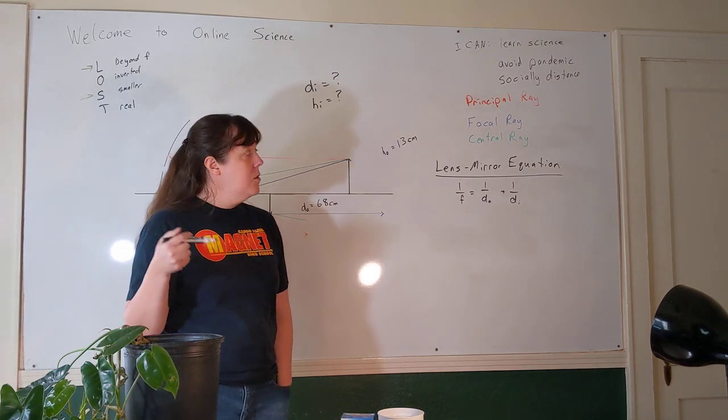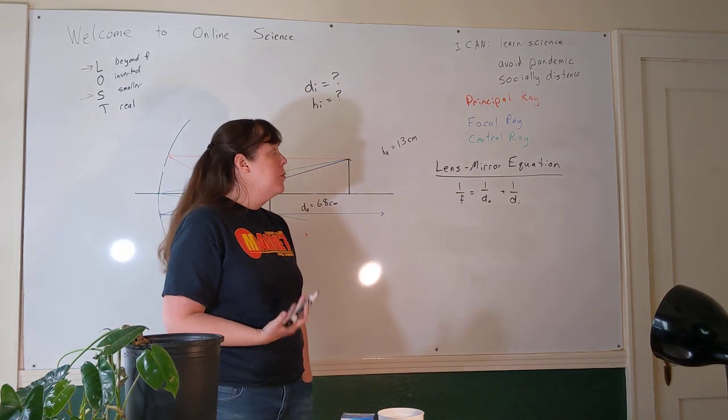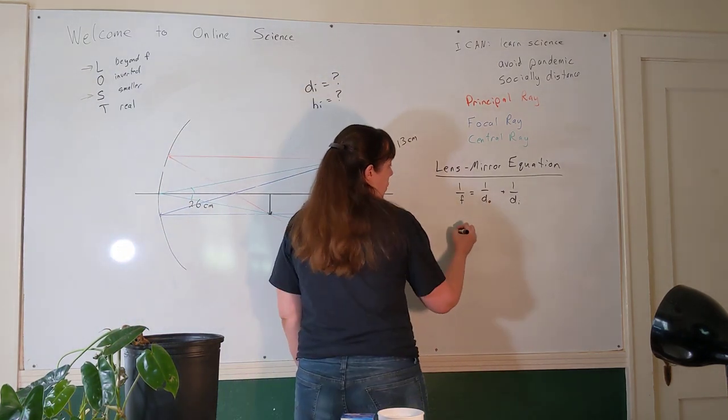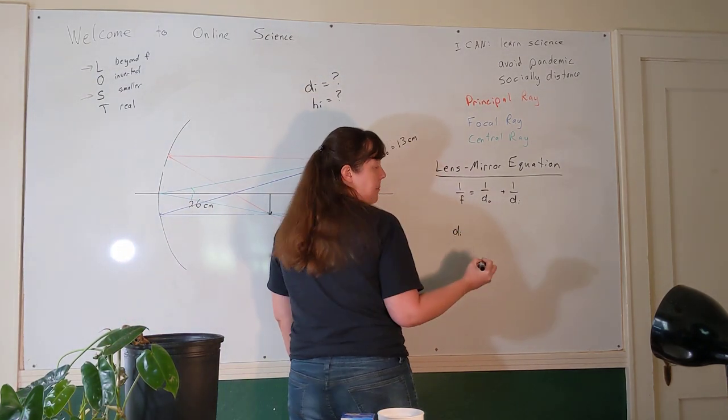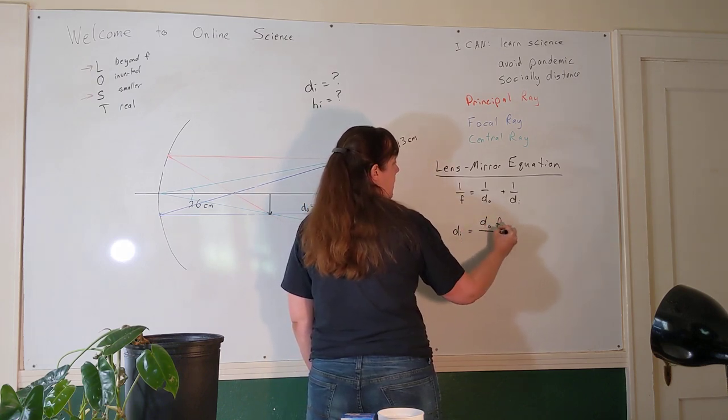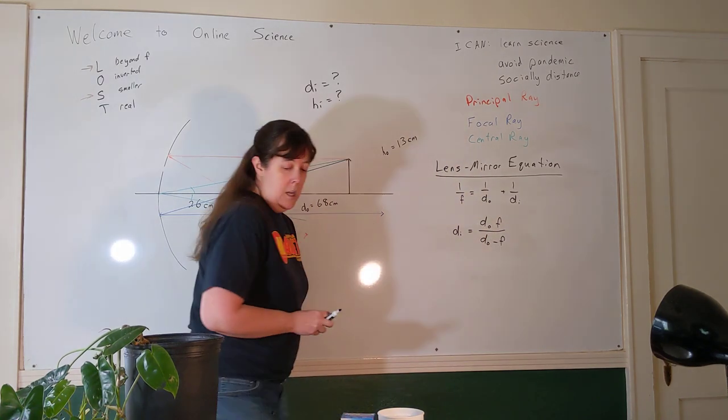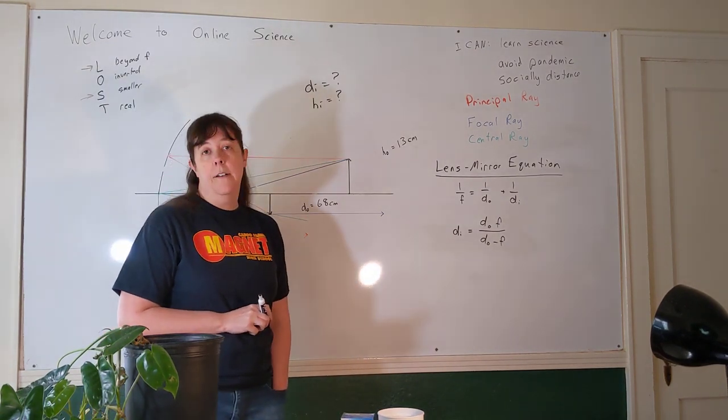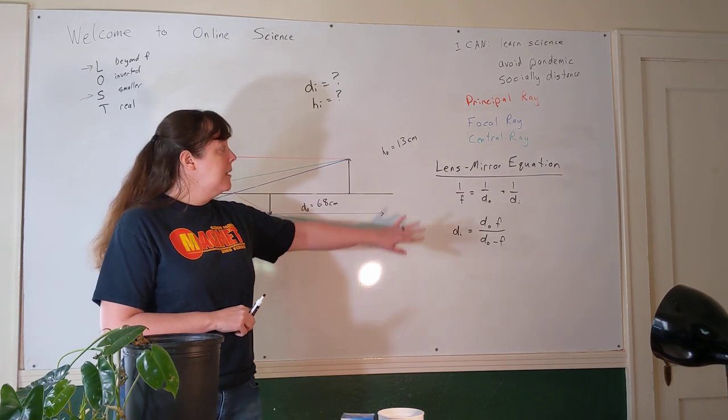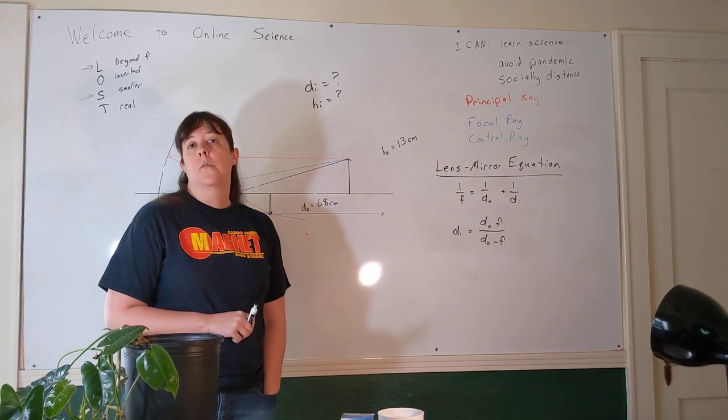Most of the time when we use this equation, we're looking for the image distance. So I'm going to go ahead and just tell you the algebra. When we do the algebra, the image distance equals the object distance times the focal length divided by the object distance minus the focal length. di equals do times f over do minus f. Sometimes it's handy just to have that written down.